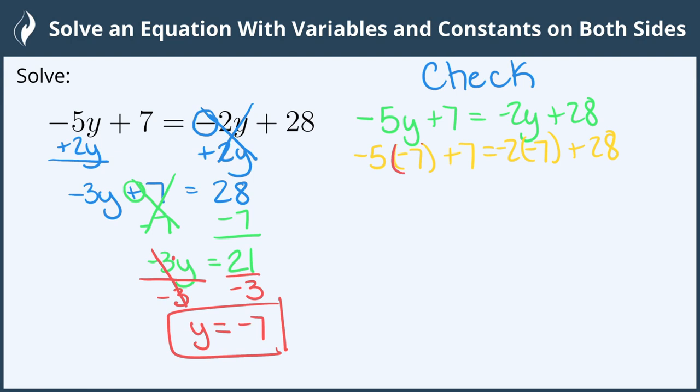The parentheses help us know that that is multiplication and not a negative 5 minus 7. It helps to make all of the operations and the signs clear.